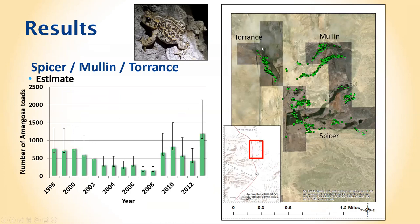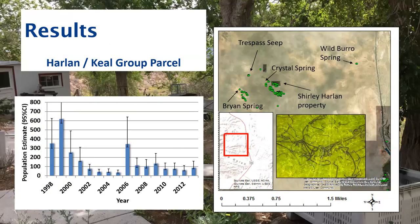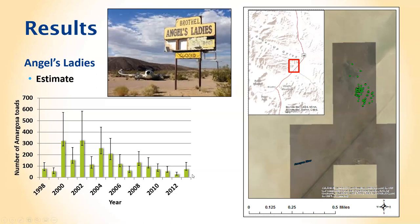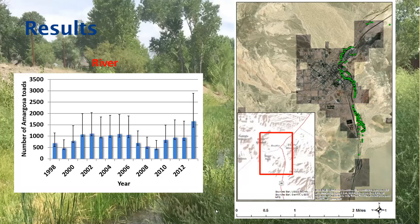The Torrance parcel was later purchased by The Nature Conservancy for restoration. The Spicer property likely has 500 to 1,000 animals. Shirley's Harlan Keel property showed toads very adapted to garden areas and urban environments with artificial lighting and water sources. Access to the Angels Ladies site was lost when the landowner died in 2013, but that population remains stable and was home to the largest individual toads.